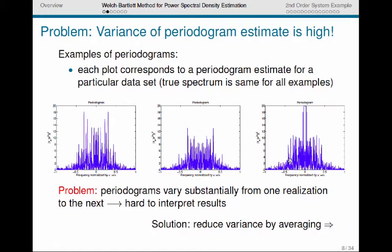What you notice is that the periodograms vary quite substantially from one block to the next. It's very hard to interpret the results, meaning it's hard to figure out what the underlying true spectrum is for this particular example. The solution to this problem with high variance is to reduce that variance by averaging, and that's what Welch and Bartlett suggest that we do.